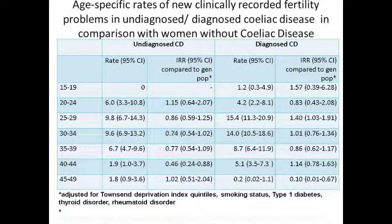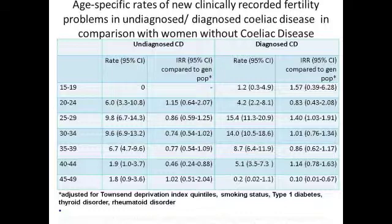We did not find any statistically significant difference between the rates of new clinically-recorded fertility problems in women with both undiagnosed and diagnosed celiac disease compared with women without celiac disease, except for the 25–29 year age group, where women with diagnosed celiac disease were 41% more likely to have clinically-recorded fertility problems compared to women without celiac disease. However, the absolute excess risk was only 0.5%.